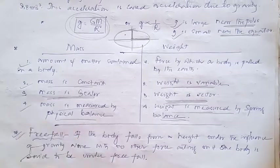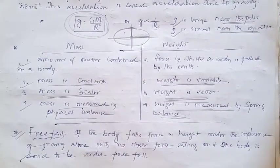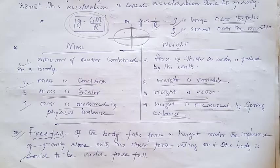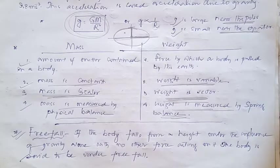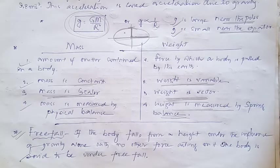Free fall means if a body falls from a height under the effect of gravitational pull alone, with no other force acting on it, that kind of fall is called free fall. When a ball falls from a height, forces like gravitational pull, air resistance, and viscous force act on it — so that is not free fall. If we eliminate all resistive forces and the body falls only under gravitational pull, we call it free fall.